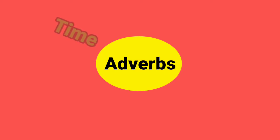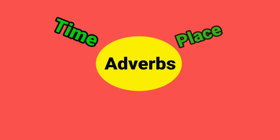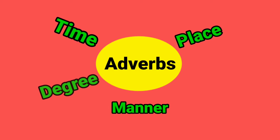So let's recapitulate all the major types of adverbs again: adverbs of time, adverbs of place, adverbs of manner, adverbs of degree, and adverbs of frequency. I think the chapter is clear to everybody. Thank you and have a very nice day ahead.